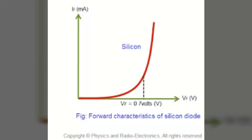A rising curve is obtained with forward bias as shown in the figure. From the forward characteristic it is seen that at first the current increases very slowly and the curve is non-linear, because the external applied voltage is being used up in overcoming the potential barrier. However, once the external voltage exceeds the potential barrier voltage, the P-N junction behaves like an ordinary conductor, therefore the current rises very sharply with increases in external voltage.